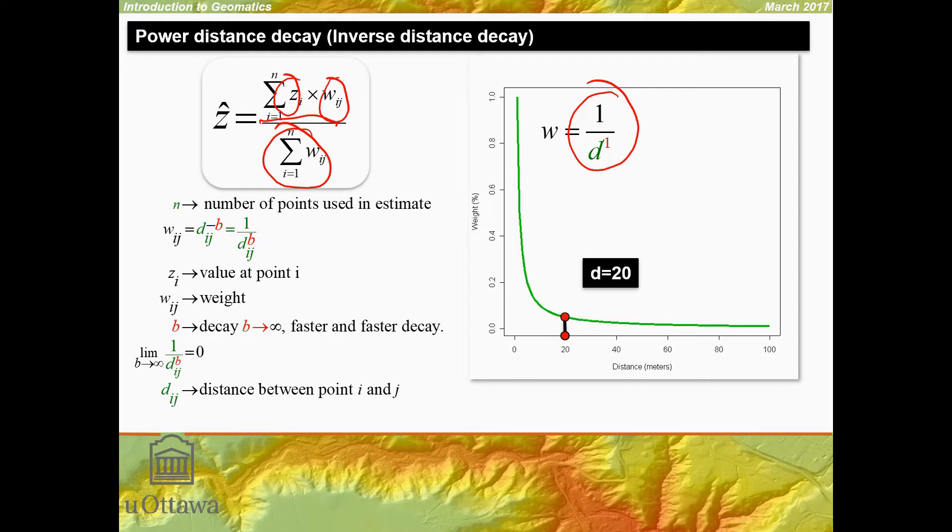For example, if we had a location at 20 units away, the weight or its influence at D0, the location at which we want to interpolate the estimate, would be 1/20th of its value observed there, or 0.05.